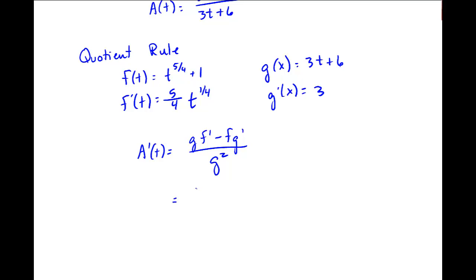I'm going to go ahead and apply the quotient rule here. A'(t) equals gf' minus fg' over g squared. I get 3t plus 6, that's my g, times f', which is 5/4 t to the 1/4, minus f, t to the 5/4 plus 1, times g' which is 3, over g squared, 3t plus 6 squared.